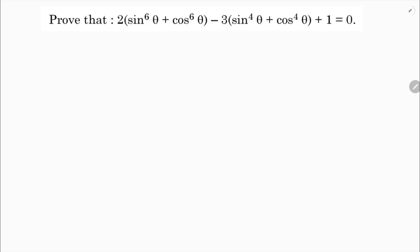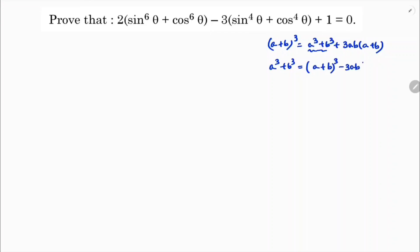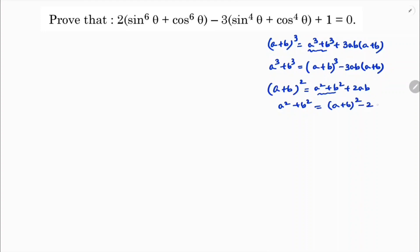To solve this problem I will use two identities. One is a plus b whole cube, from which a cube plus b cube is a plus b whole cube minus 3ab into a plus b. The other is from a plus b whole square: a square plus b square equals a plus b whole square minus 2ab.